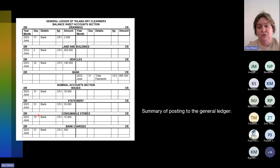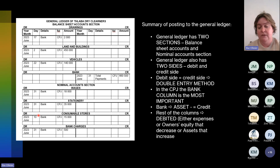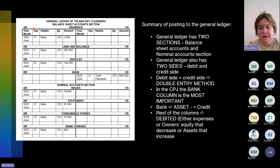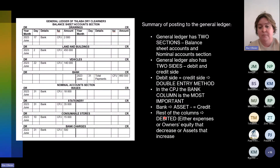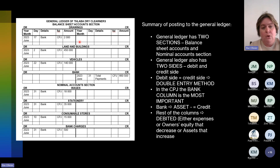So let's summarize again. Remember we have a balance sheet account section and a nominal account section, with a debit side and a credit side. In the CPJ, your most important column is bank. Bank is an asset that decreases, that's why it is credited, and all the other columns are debited because they are either owner's equity, assets that you bought, or expenses that decrease your owner's equity.